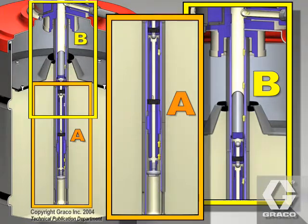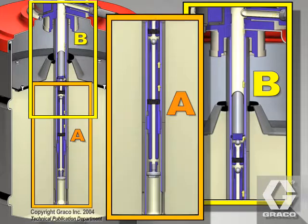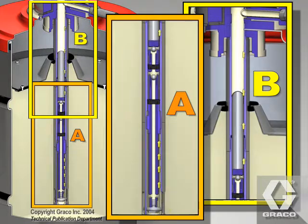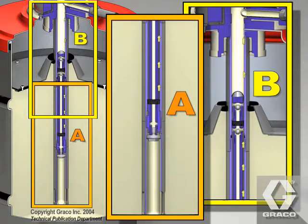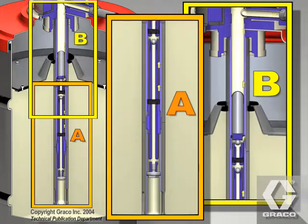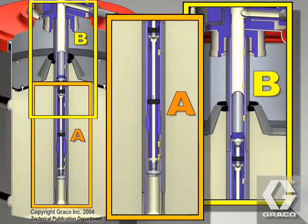On the next upstroke, the upper ball check is closed, allowing the upper half of the grease to be pumped. At the same time, the grease loaded on the priming stroke is forced through the holes near the closed lower check, trapping grease between the foot valve packing retainer and lower ball check.